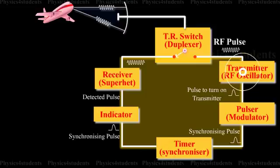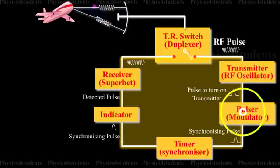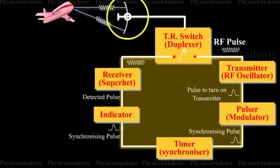The transmitter is essentially a high-power magnetron oscillator which generates high-power pulses. This transmitter is turned on and off with a periodic pulse from the pulser. Thus the transmitter generates periodic pulses of very short duration. These short pulses are fed to the antenna which radiates them into space.